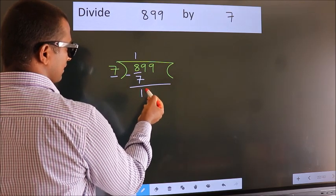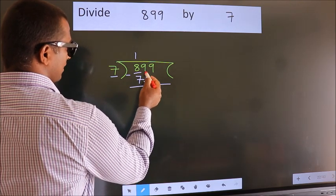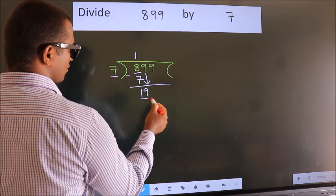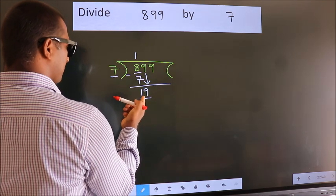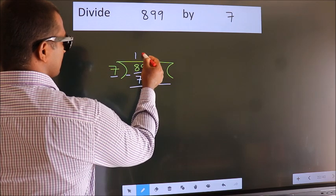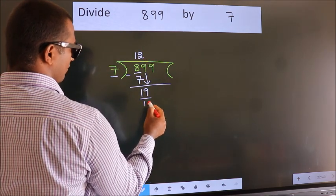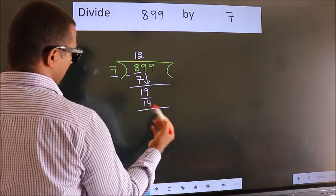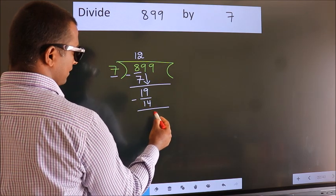After this, bring down the next number. So 9 down. So 19. A number close to 19 in the 7 table is 7×2=14. Now we subtract. We get 5.